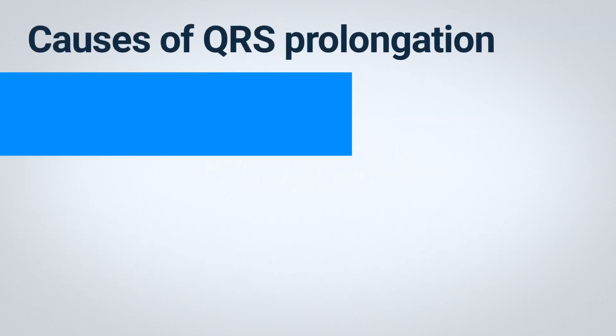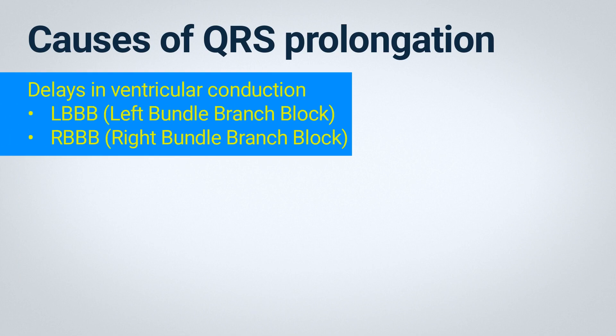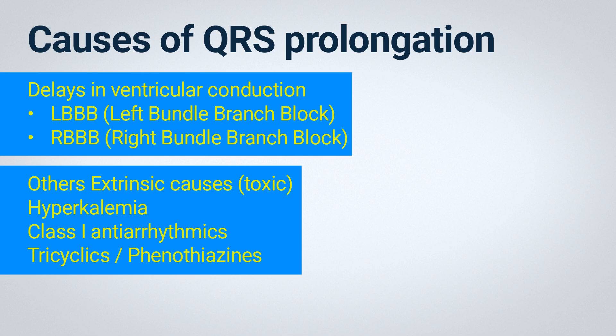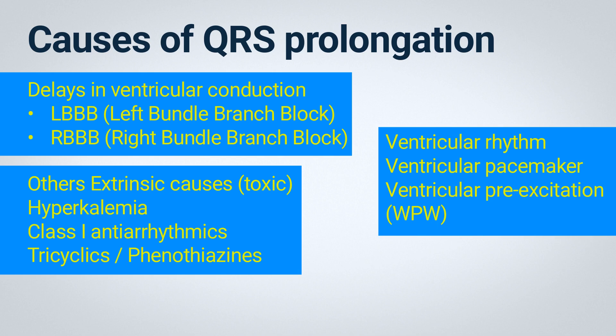Among the various causes of QRS prolongation, some of the most common include delays in ventricular conduction, such as left or right bundle branch blocks or other conduction disturbances. Extrinsic causes can also play a role, such as hyperkalemia, as demonstrated in the previous ECG example. The use of class 1 antiarrhythmic drugs like flecainide, propafenone, quinidine, and procainamide may contribute as well. Furthermore, the use or intoxication of tricyclic antidepressants, especially when combined with certain phenothiazines like chlorpromazine, can lead to QRS prolongation. Ventricular rhythms, either due to intrinsic factors or triggered by ventricular pacing, can also cause widened QRS complexes. Finally, ventricular preexcitation observed in cases with an accessory atrioventricular pathway, such as in Wolff-Parkinson-White (WPW) syndrome, can result in QRS prolongation.